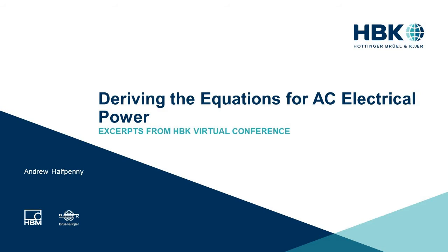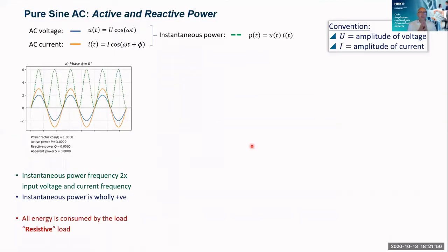First of all, let's have a look at some definitions for that pure AC signal, the type you get on a mains grid. I'm going to use a simple little approach here. We're going to use analytical cosine waves.